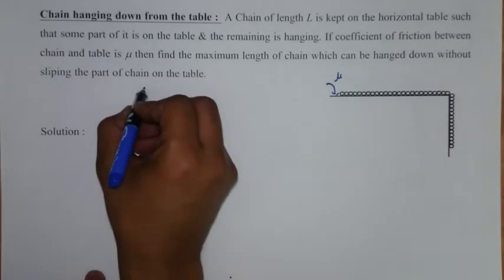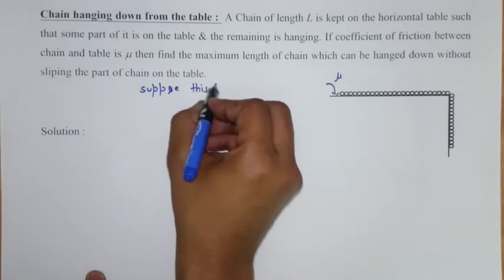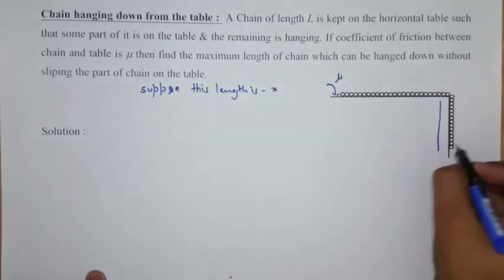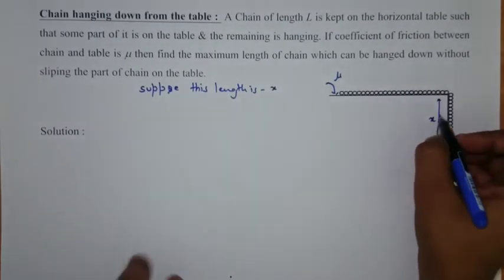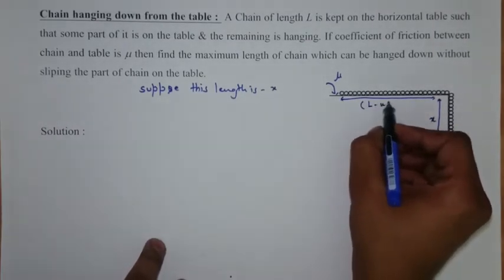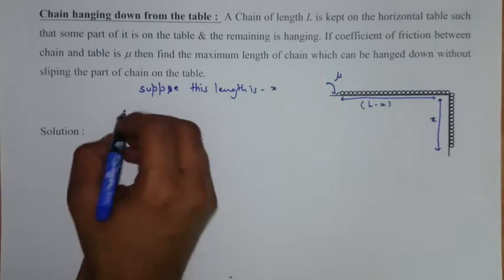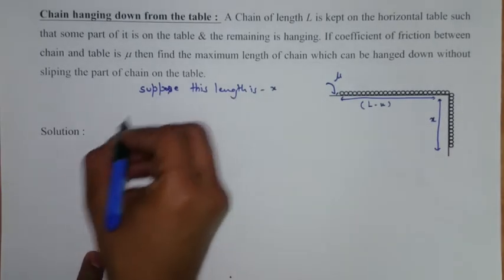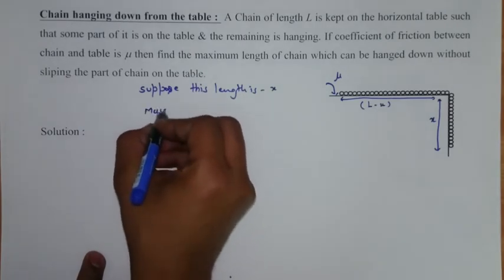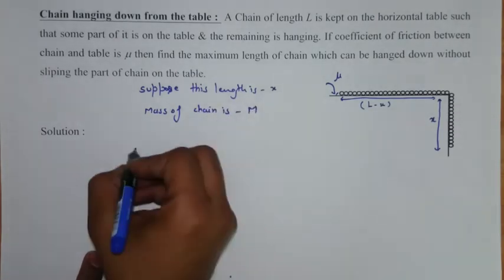Suppose this length is x. So this would be x and this remaining length would be L minus x. Now, let us suppose that mass of the chain is M, chain is capital M.